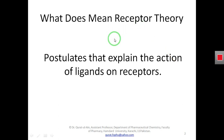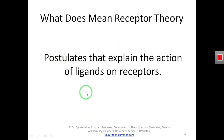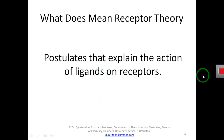Now we will see what receptor theories mean. Receptor theories are postulates or hypotheses of different scientists that explain the action of a ligand on a receptor. These theories explain how a ligand will behave when it binds with the receptor — whether the ligand will inhibit the receptor activity, stimulate the receptor, or desensitize the receptor.